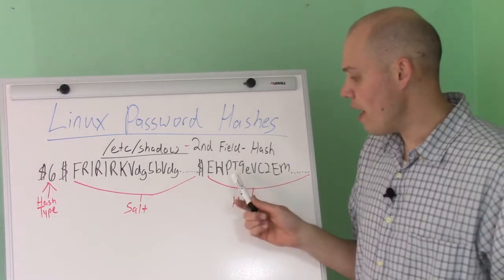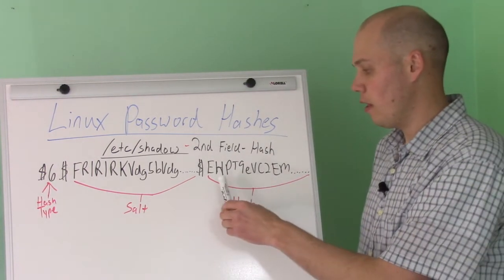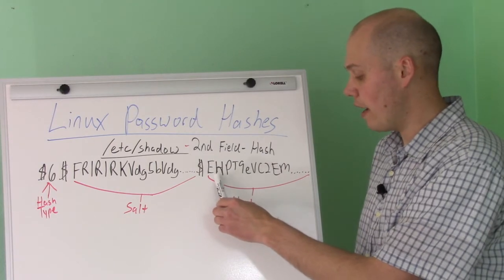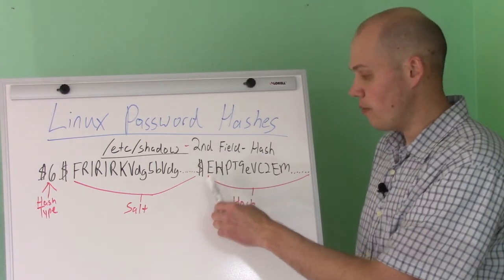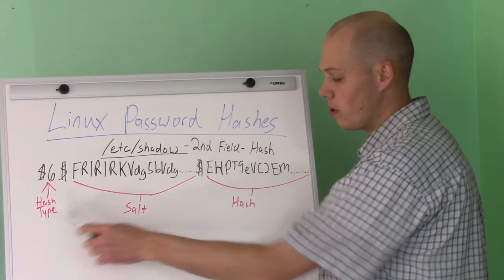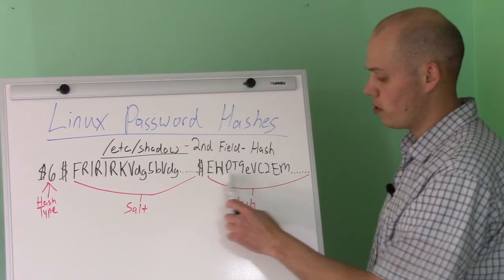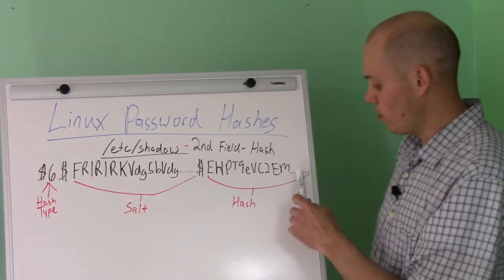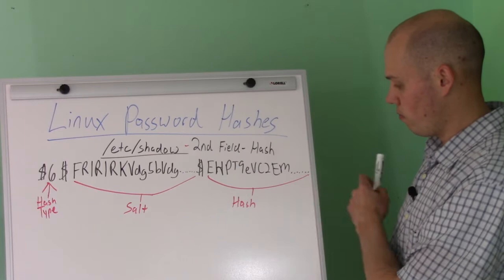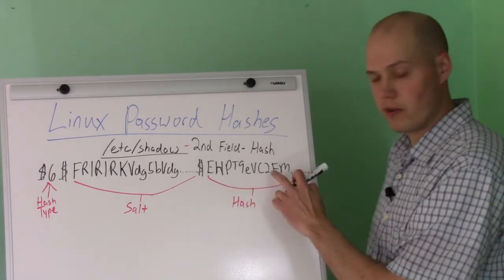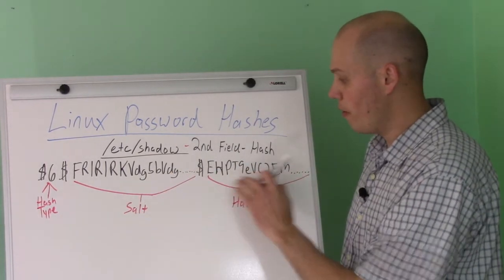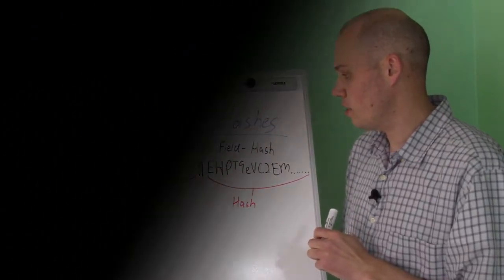The last part of the hash field is the actual hash. Depending on which function you use will determine how long it is — an SHA-512 hash is pretty long. And that's the three main parts of your /etc/shadow hash field.